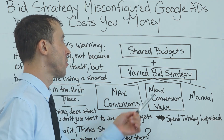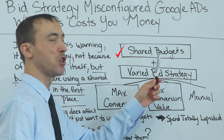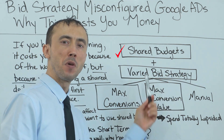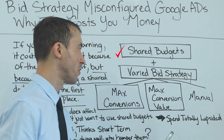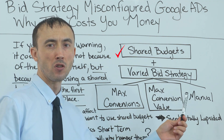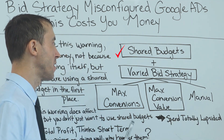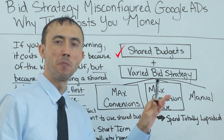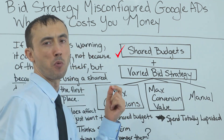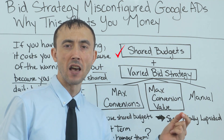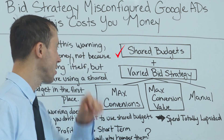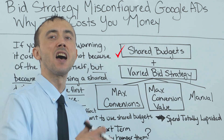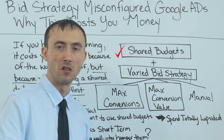In short, the reason for this is because if you have shared campaigns with a shared budget and a varied bid strategy — whether you're using max conversions, max conversion value, manual bidding, or target impression bidding — if you have different bidding strategies, you can get this warning. In particular, this is when you use a portfolio bidding strategy where you have certain campaigns sharing the same bidding strategy, and then another campaign in the same shared budget that does not have that same portfolio bidding strategy.